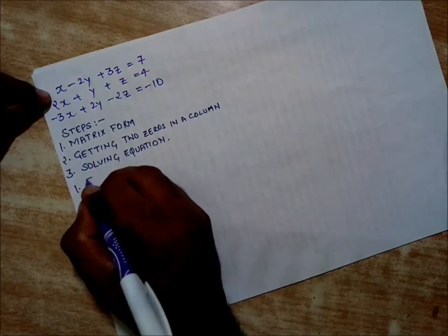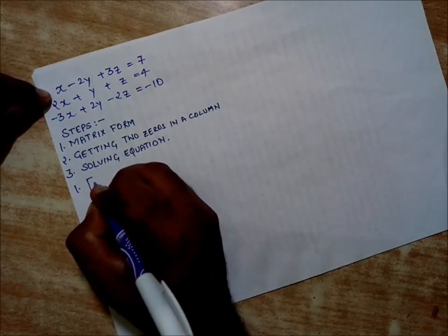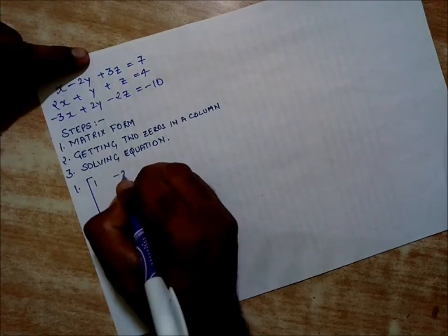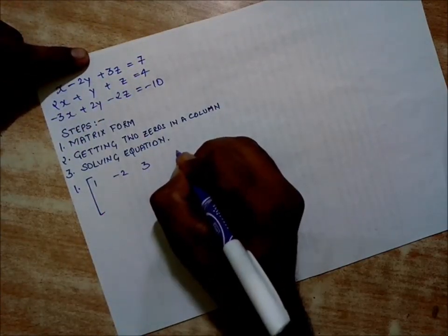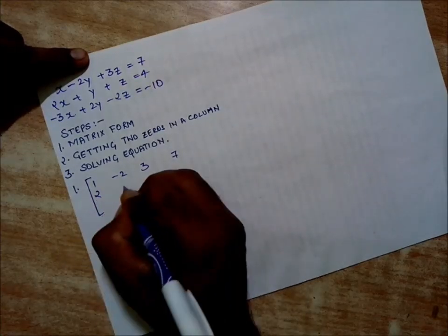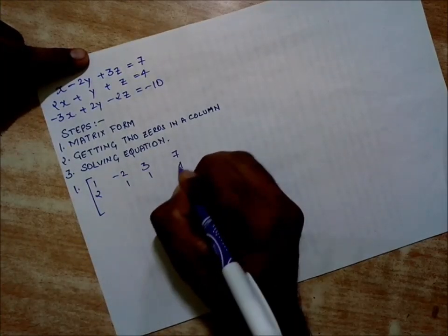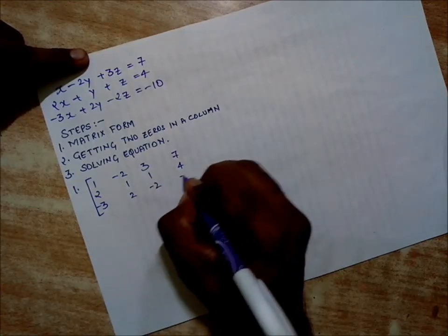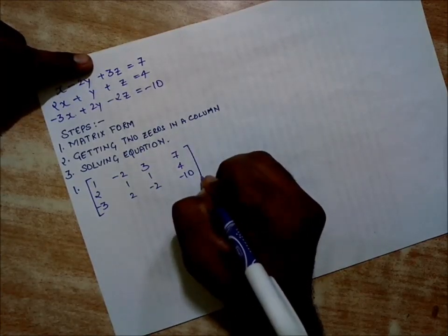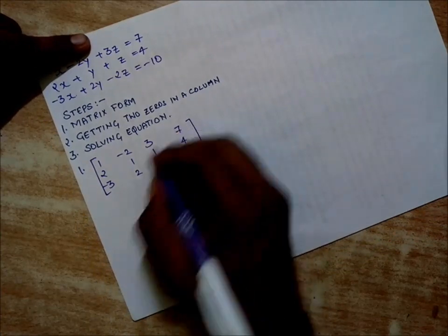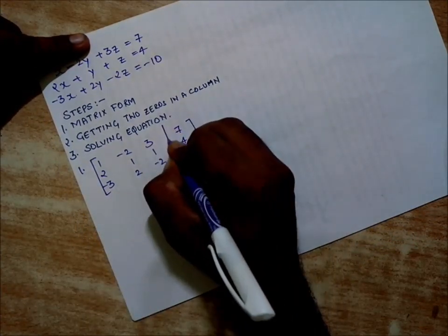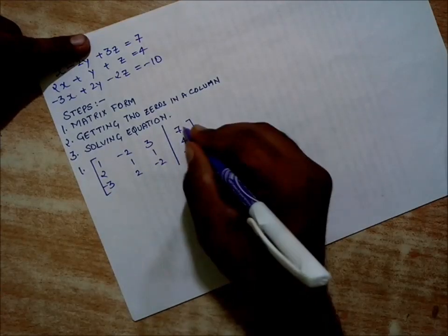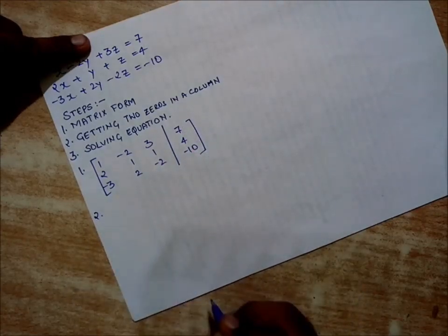Step number one is simply writing the entire equation in form of a matrix. I'll be writing the coefficients and the constants: 1, -2, 3, 7; 2, 1, 1, 4; -3, 2, -2, -10. Step one is completed. We can make a barrier because these are the variables and these are the constants.